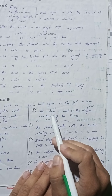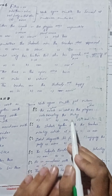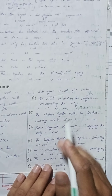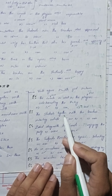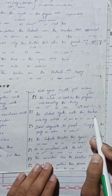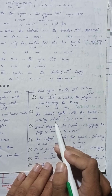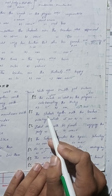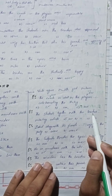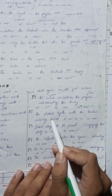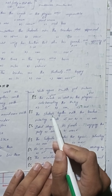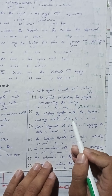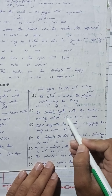MCQ one: 'The coach as well as the player ___ .' یہاں 'as well as' آیا ہے۔ First noun 'coach' singular ہے تو verb بھی singular آئے گی۔ MCQ two: 'The students together with the teacher ___ waiting outside.' First noun 'students' plural ہے تو verb بھی plural ہوگی۔ Right option: 'are'.